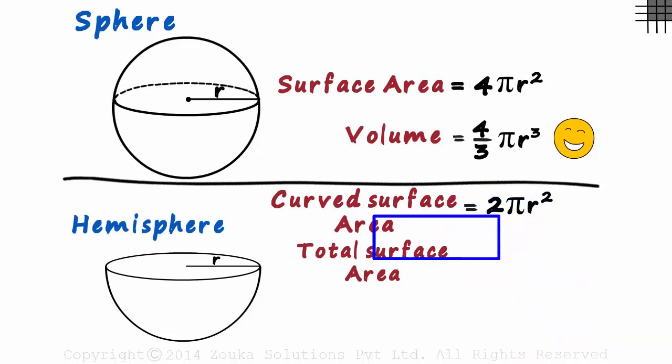What about the total surface area? The total surface area will be the sum of the area of the curved surface and the area of the circle on top.